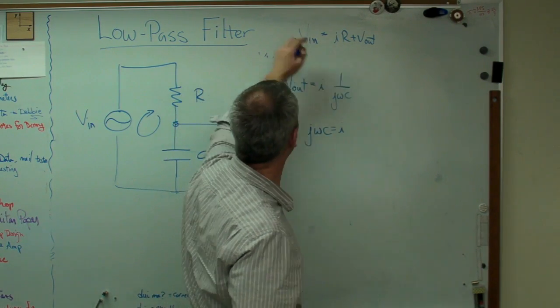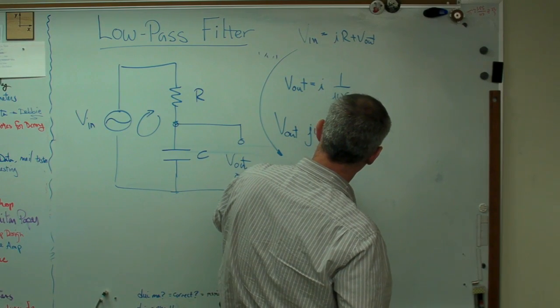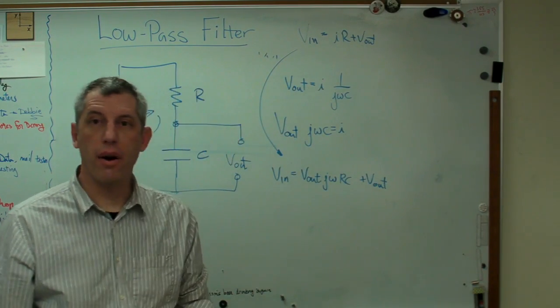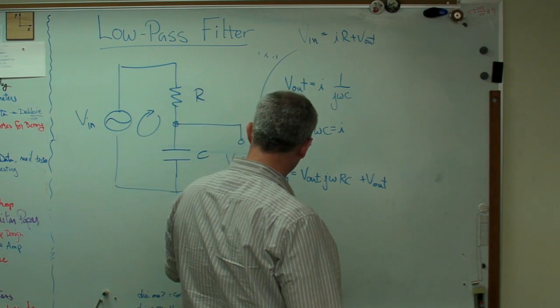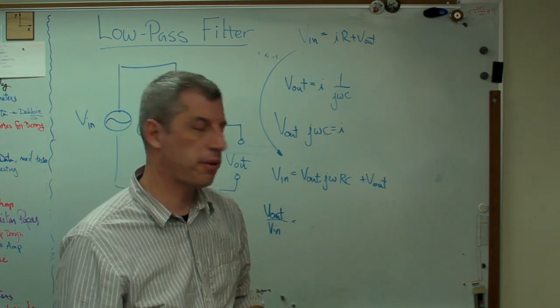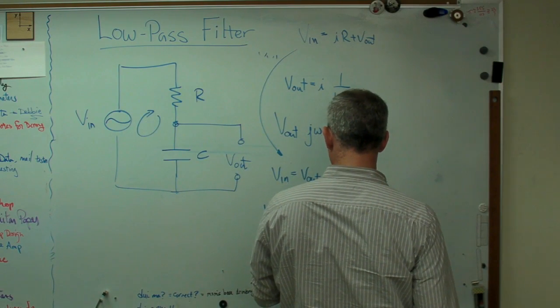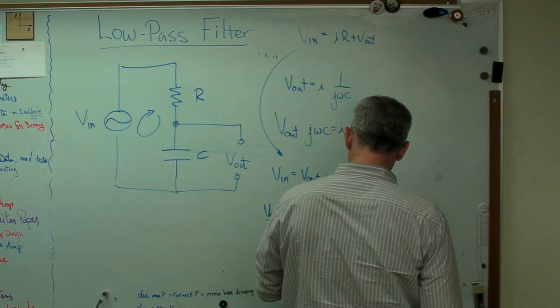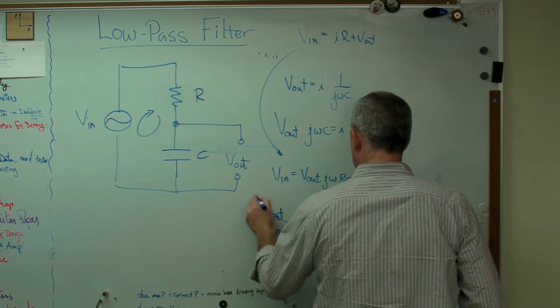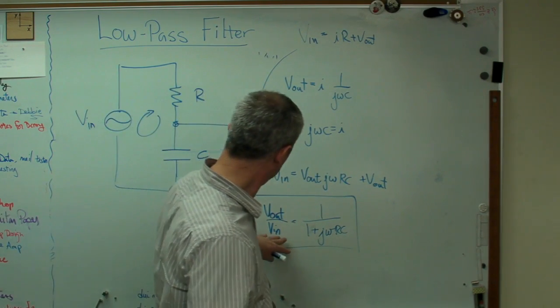So now I'm going to rewrite this equation down here. V in equals V out times J omega RC, because that R's got to be there, plus V out. Now I'm going to bring it on home here. What I want to do is I want to show V out over V in. That's called a transfer function. That plot I drew over here that went from 1 to 0, that was a transfer function. So I want to write an expression for what that looks like. Well if I do that, I'm going to get 1 over 1 plus J omega RC, I guess. That's the transfer function. That tells you how a low-pass filter works.